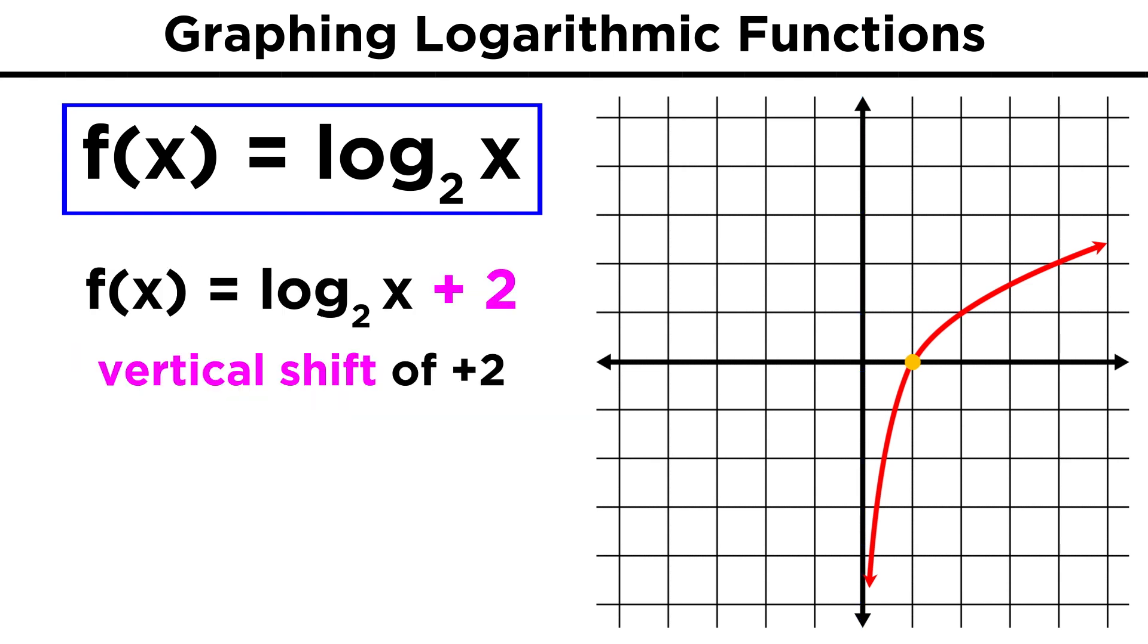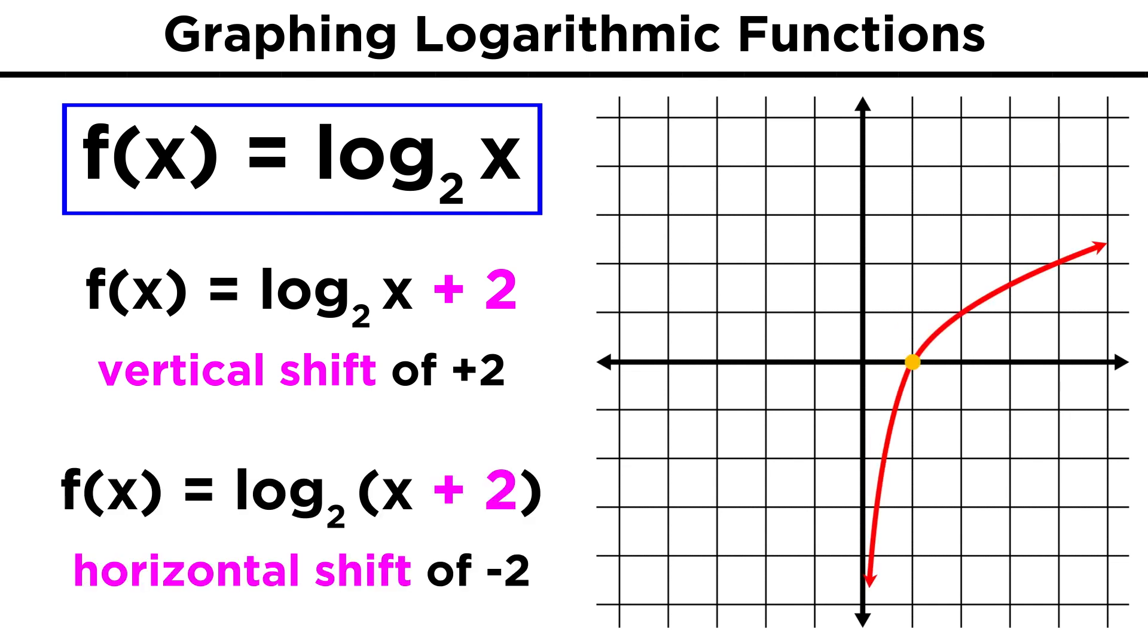Adding or subtracting a number outside of the log produces a vertical shift. Adding or subtracting a number inside the log will produce a horizontal shift.